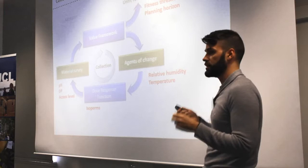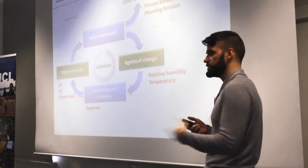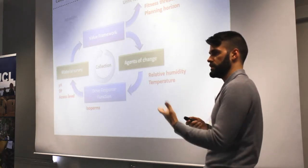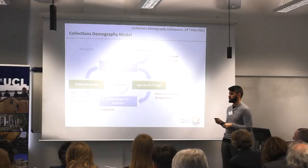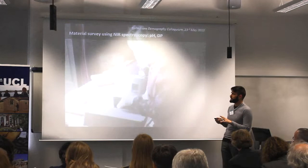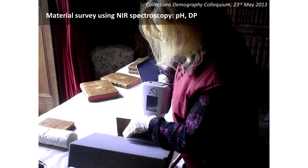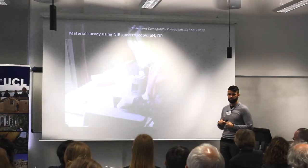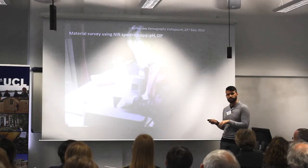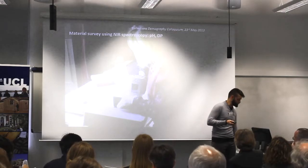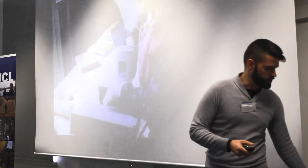pH and the degree of depolymerization are actually measured from the collection, and this is something that can be repeated over time at various intervals so that the model can be run again and the prediction of the model assessed depending on what has actually happened in the collection. We wanted to show you that this actually does happen — it wasn't a fictional number we put in. This is Carlotta sitting at the back endlessly taking NIR spectra of a collection of books and archival records, and these are the data we actually put into the model for the graph that I will show you again in a minute.